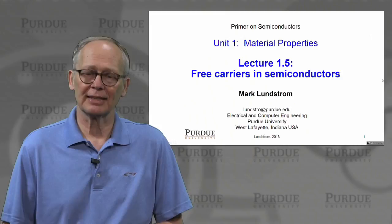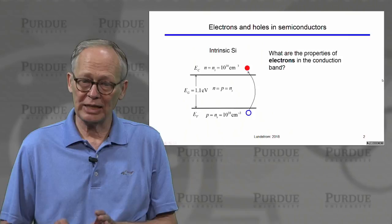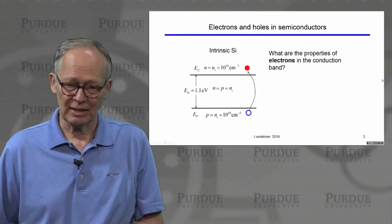So what do we mean by free carriers? We have holes in the valence band and electrons in the conduction band, and they are free to move about the semiconductor lattice and to conduct current. This is what we're interested in for the operation of semiconducting devices.